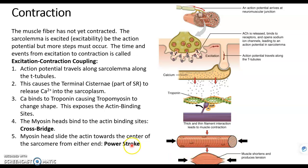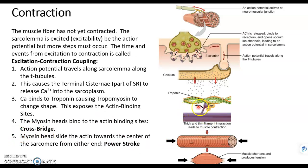Two key terms: when myosin binds to actin, that's called a crossbridge. When myosin moves actin towards the center of the sarcomere — slides it — that's called a power stroke.